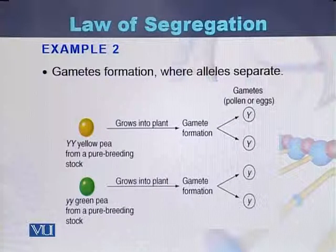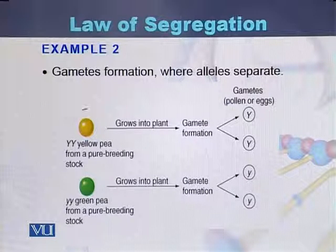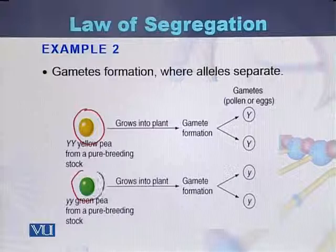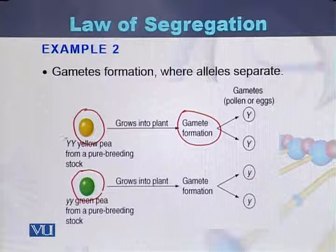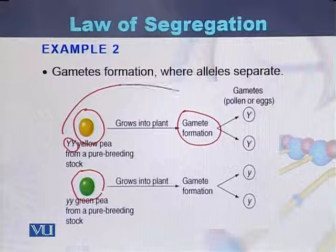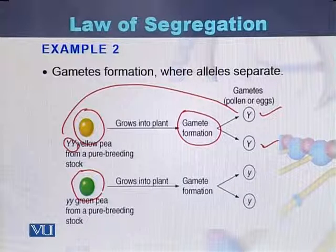Here is a second example to explain the law of segregation. In this case, one group of plants produces yellow seeds and the second type of plants produces green seeds. During gamete formation, the alleles capital Y and capital Y will be separated into gamete 1 and gamete 2. In both plants, the gametes are separated from each other during the process of gametogenesis.